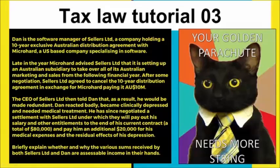For this tutorial we're going to be looking at some slightly more complex scenarios to do with income, particularly compensation. The first scenario involves a company having an exclusive distribution agreement with an overseas organization, and this agreement gets cancelled. We're going to be looking at the ten million dollars paid to determine whether it's going to be income or a capital receipt.